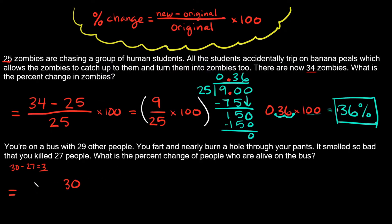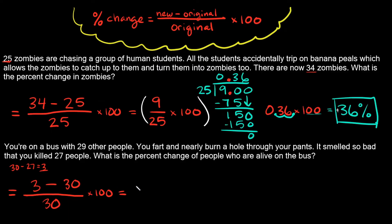So the new amount of alive people is 3. Following the formula, the percent change equals the new amount of alive people — 3 — minus the original amount of alive people — 30. So 3 minus 30, divided by the original amount of 30. We're going to simplify this and then multiply by 100 at the end. What is 3 minus 30? That would be negative 27, because you have a small number and you're subtracting a bigger number. So that's negative 27 over 30, times 100.